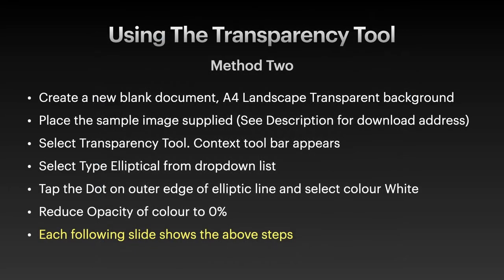Method two: using the transparency tool. You might think it's the same as the fill tool, but it is slightly different. The steps are: create a new blank document, place the sample image as supplied, select the transparency tool (not the fill tool) — the context bar again appears. Select type 'Elliptical' from the drop-down list. Tap the dot on the outer edge of the elliptic line and select color white. Reduce the opacity of the color to zero percent.